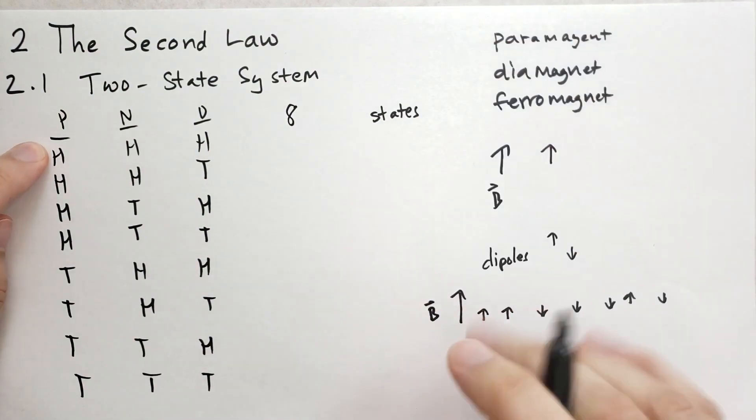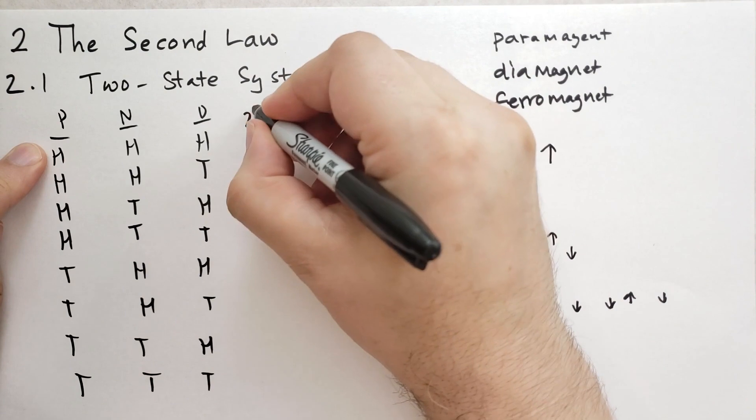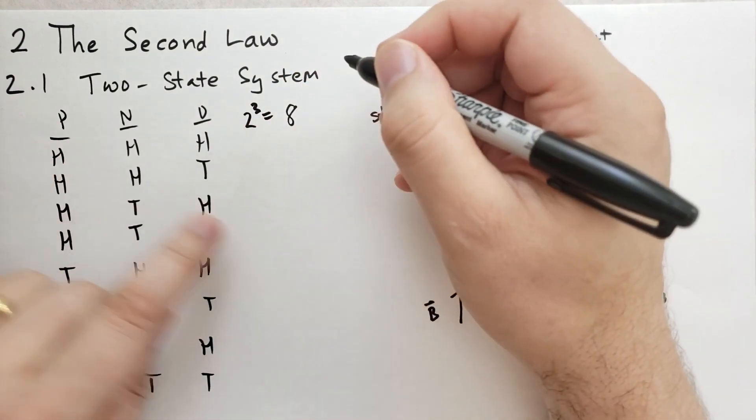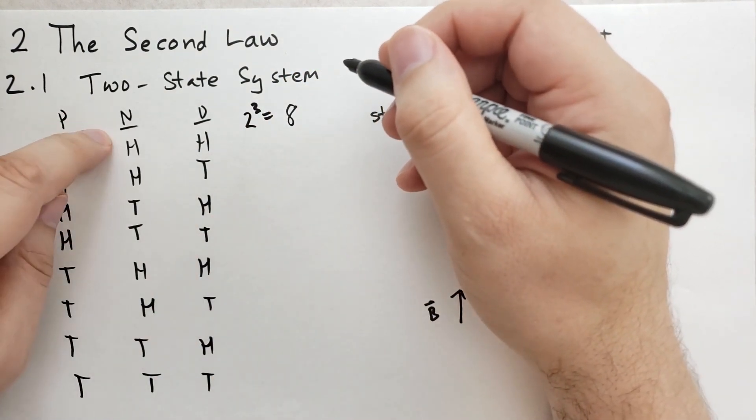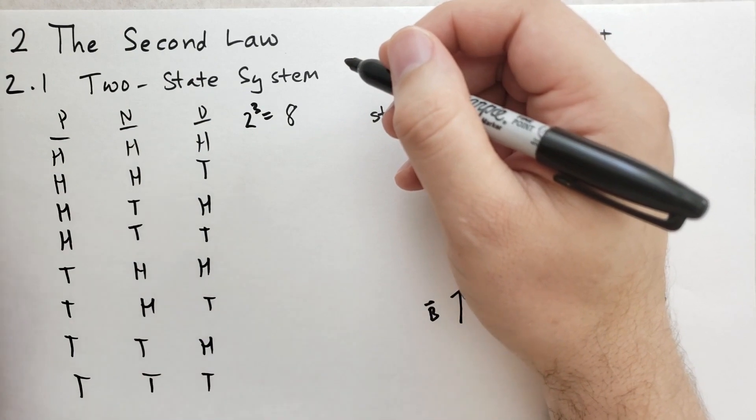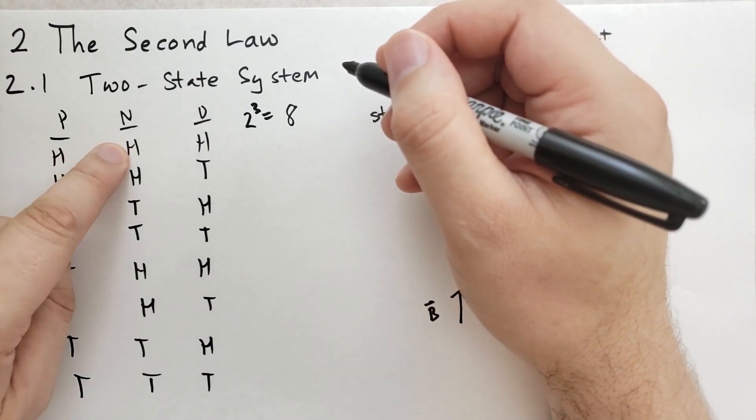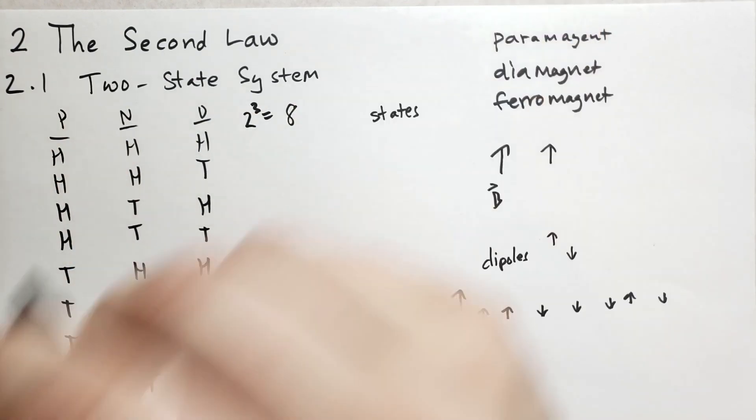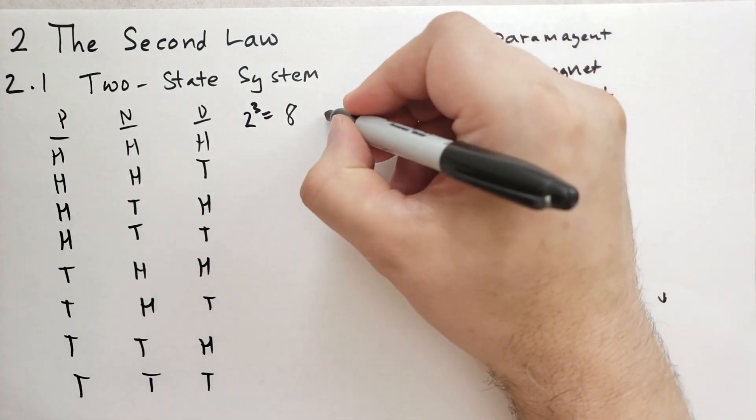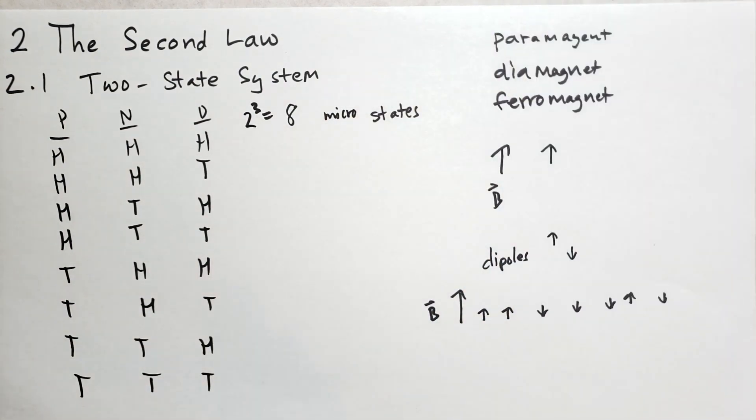And that should make sense because two to the three is eight. Just two times two times two. So there's two options here. There's two options here. There's two options here. And they're independent of one another. So this could be heads or tails regardless of what the others are. And we're going to call these microstates. What I mean by a microstate and what this book means by a microstate, it is one possible configuration of all the possible particles in the system.